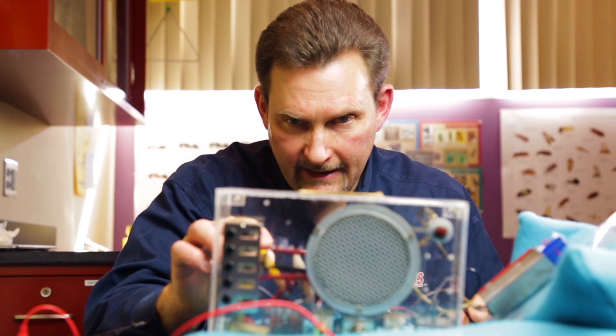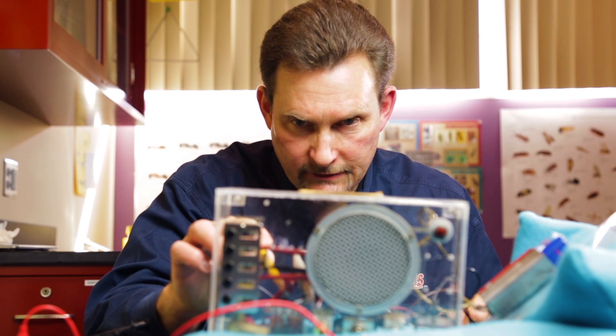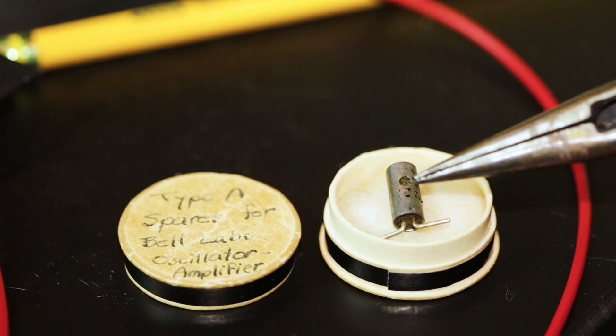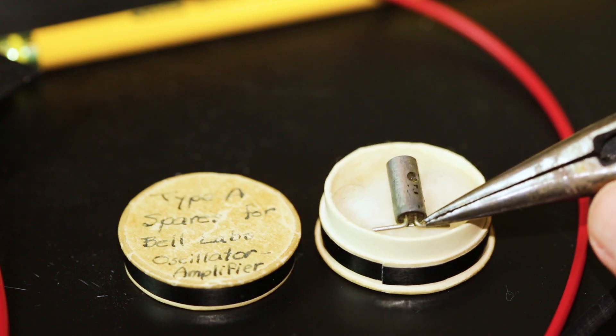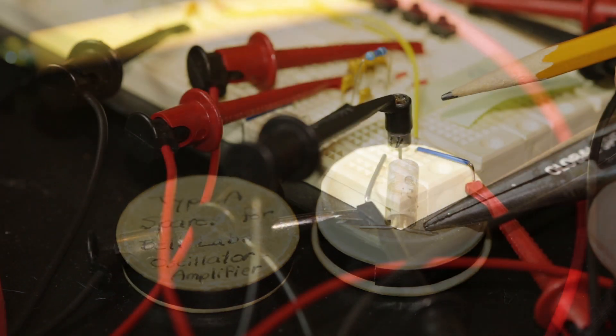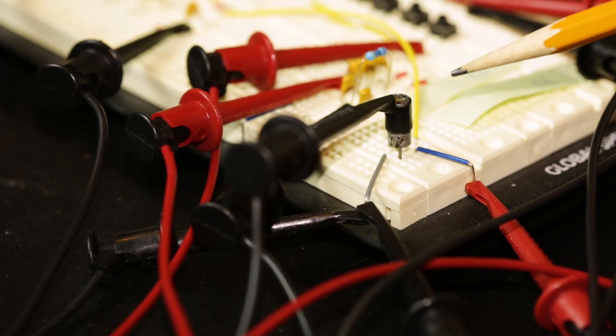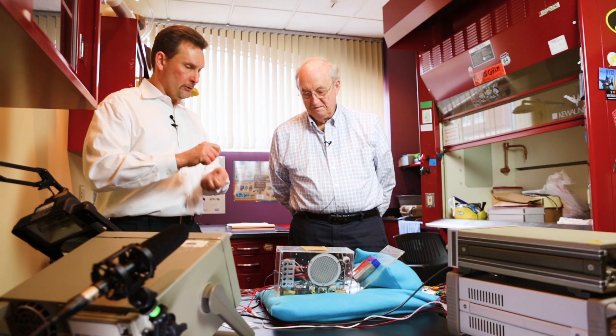The original point-contact transistor on the oscillator side failed, and so we actually were able to jumper in another point-contact transistor that was lent to us by Bill Bardeen, John Bardeen's son.